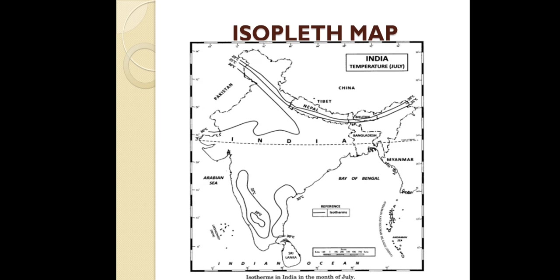Next is the isopleth map. The word 'isopleth' is derived from the Greek where 'isos' means same and 'plerathon' means measure. The isopleth map shows lines joining places of equal value. It is a quantitative distributional map which represents pressure by isobar lines, temperature by isotherm lines, and rainfall by isohyet lines. Here you can see lines joining equal temperature — so this is an isotherm map.